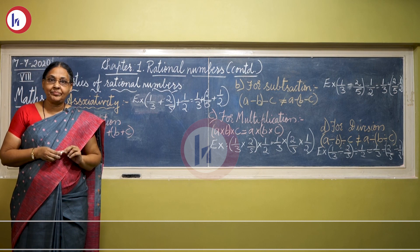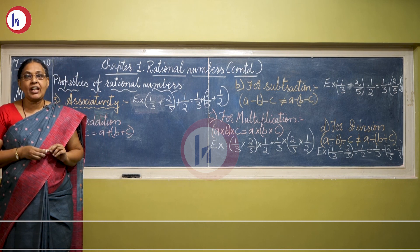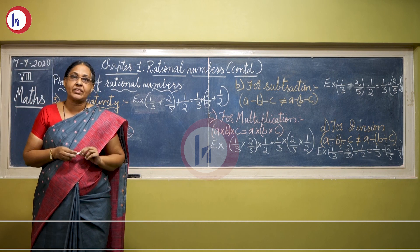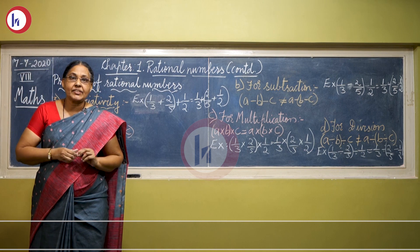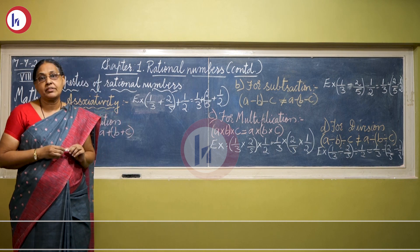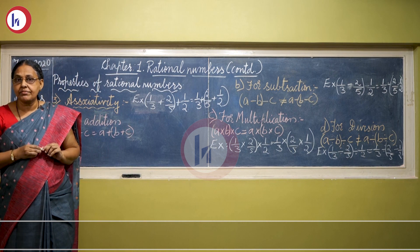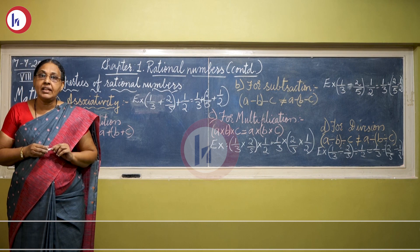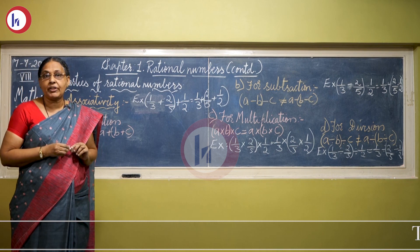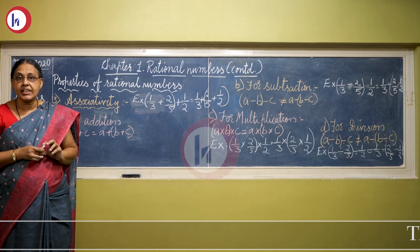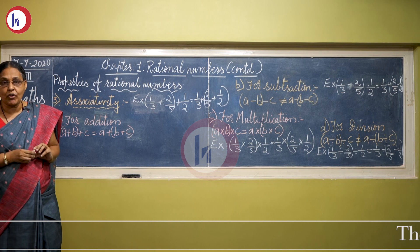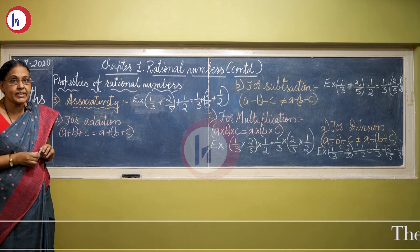Hi students. I hope you all are very fine. I hope you all have done your math homework. In the previous lesson we learned some of the properties of rational numbers. Let us start with the remaining rational number properties in this particular class. We have the third rational number property, which we call associativity.